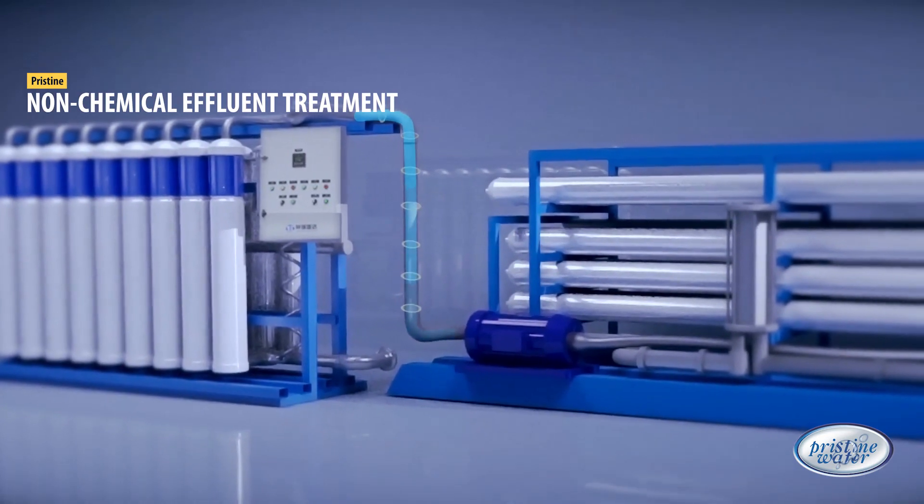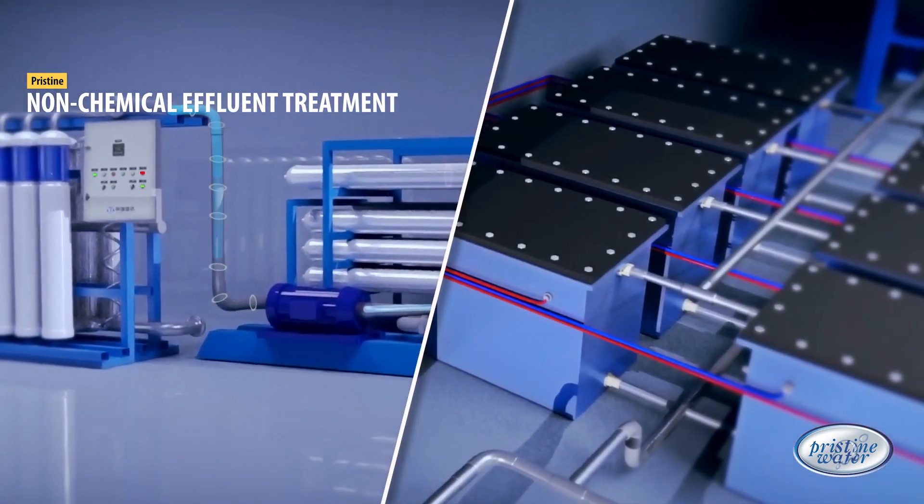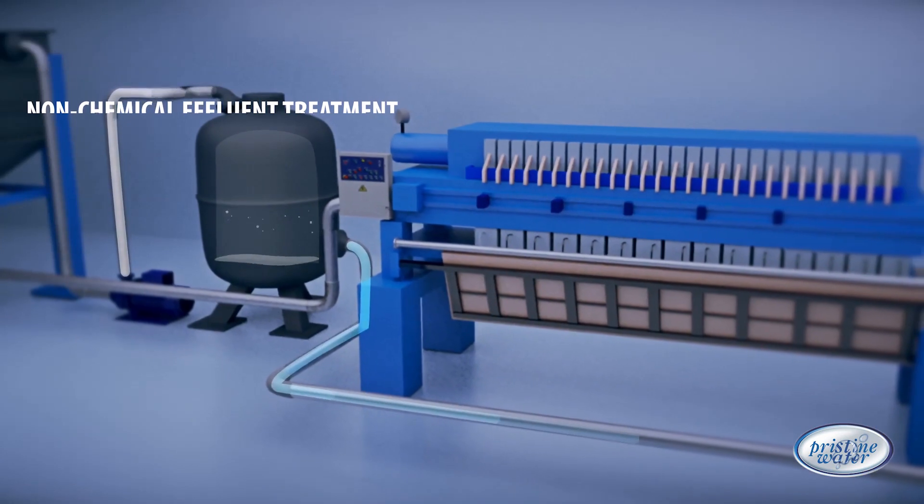Pristine Water ECOAG ETP system is engineered to order. Each system is individually designed based on the contaminant level and desired level of purity of water.